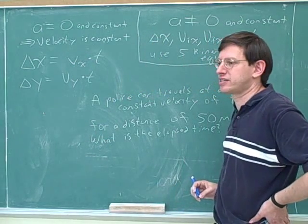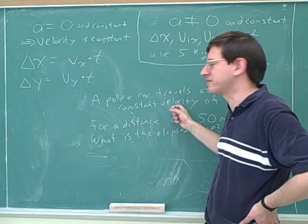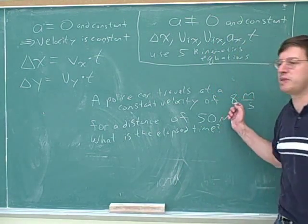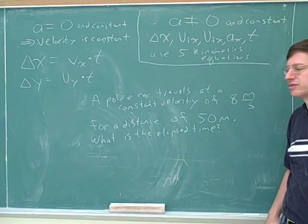And again, we can't get this confused with constant acceleration. Acceleration and velocity are completely different things. This is constant velocity. This just means, in very straightforward terms, that police car isn't changing speed. It's going at a constant speed of eight meters per second. It's not changing its speed or its direction. Okay.